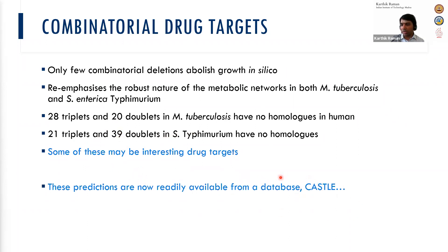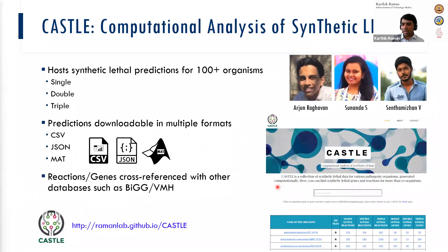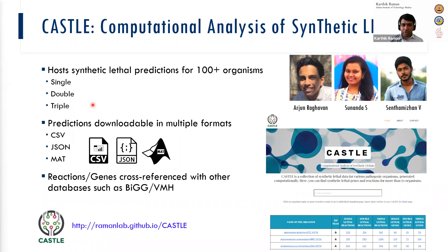These predictions are now readily available from a database we call CASEL, which has synthetic lethal predictions for 100 plus organisms. If you're working with any of these genes, you can look them up in this database. This computes it for a particular environmental condition, but it is possible to extend it by tinkering with the algorithm itself — you can get FastSL from GitHub and run it on any scenario you're interested in.